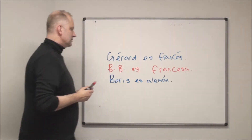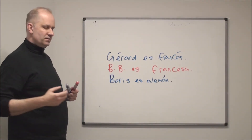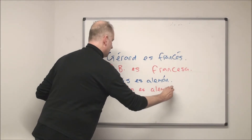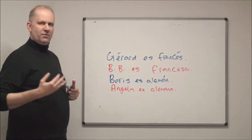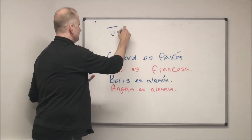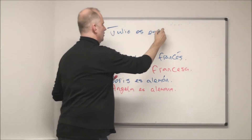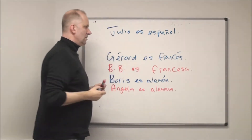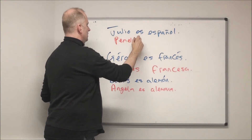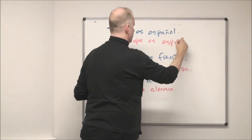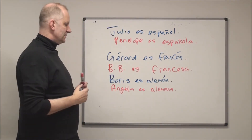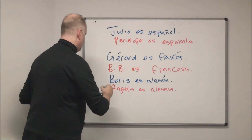'Angela Merkel is German — Angela es alemana'. Julio Iglesias is Spanish — 'Julio es español'. Brad Pitt is American — he's from the United States, so 'Brad es estadounidense'.